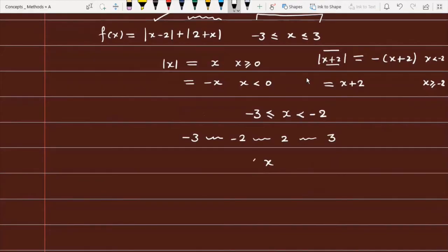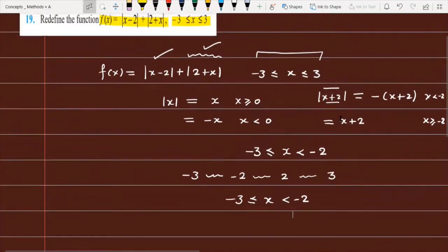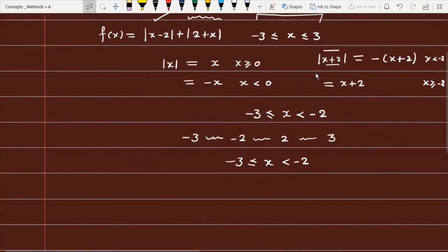I have made the first case when x is greater or equal to minus 3 but less than minus 2. When x is between minus 3 and minus 2, this quantity is already negative. To remove the mod, you introduce a minus sign. The second term is also a negative quantity. Simplifying, it becomes minus x plus 2 minus x minus 2, which equals minus 2x.